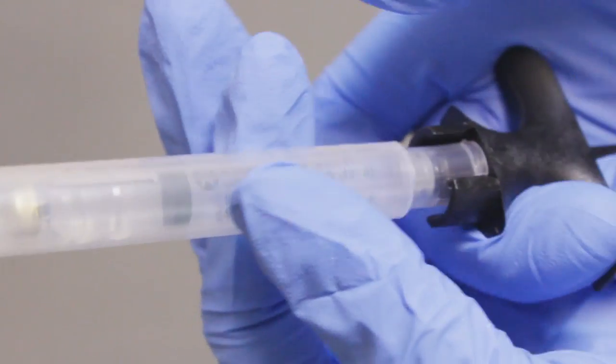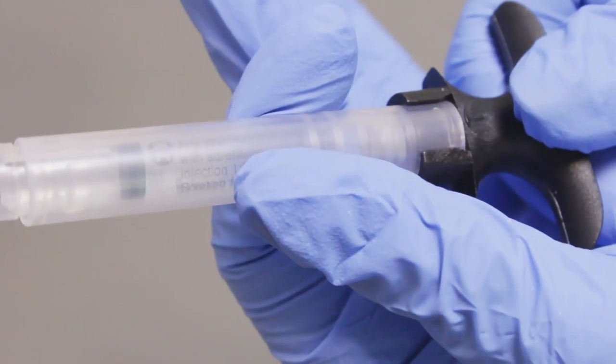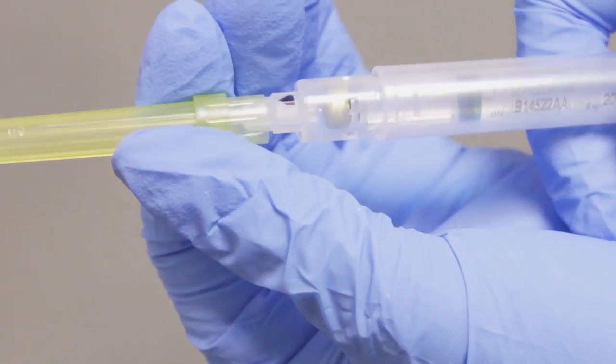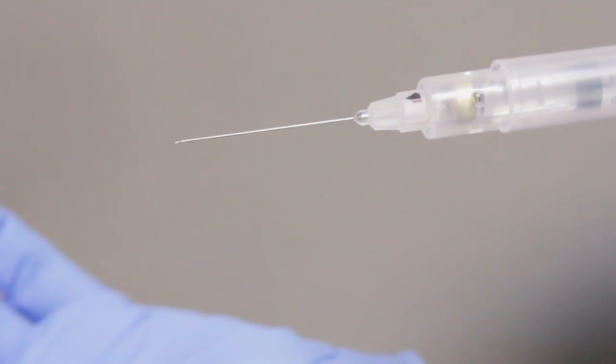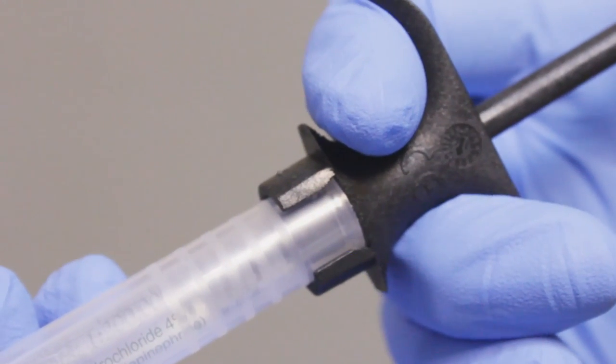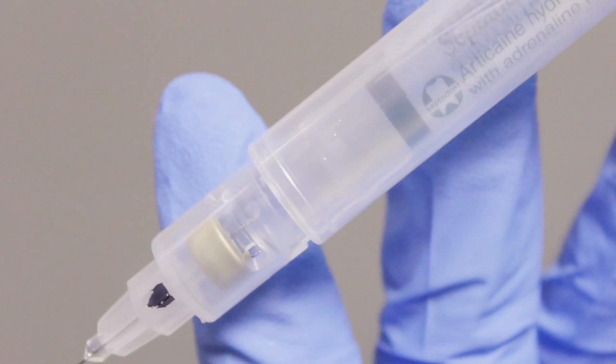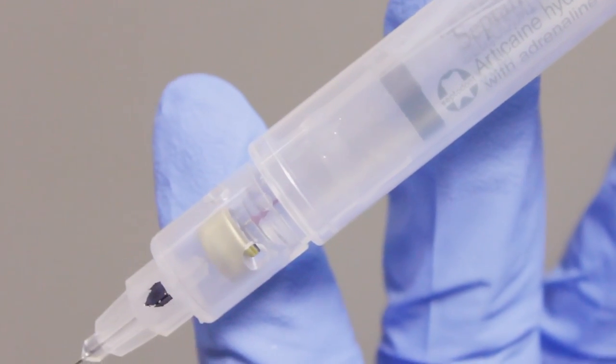Pull down the protective sheath until it clips and locks onto the handle. Ultra Safety Plus has a bevel indicator. When injecting, the bevel must face towards the bone. Apply injection pressure. Aspiration will occur when the injection pressure is released.